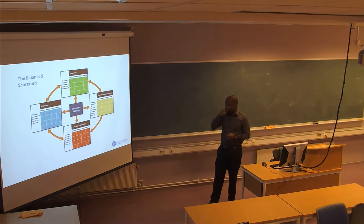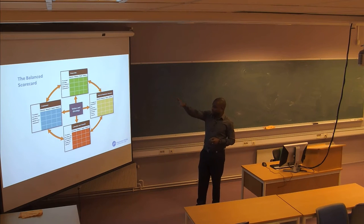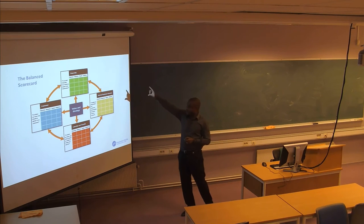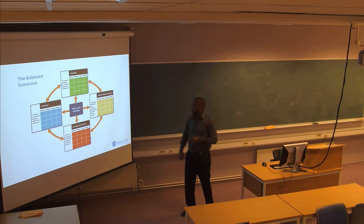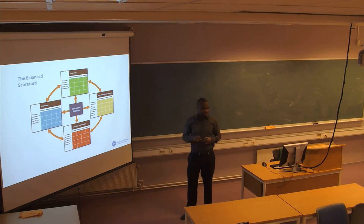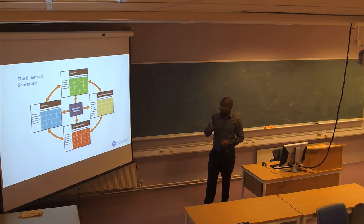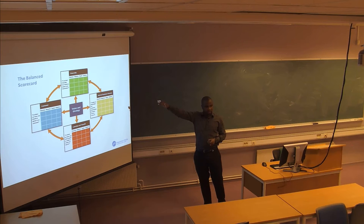At the center of your balanced scorecard is the vision and strategy of your business. You then have four main aspects. The financial aspect asks: in order to succeed financially, how should you appear to your shareholders — the people investing money in your business? You set objectives and measures as to what extent you will meet the expectations of these shareholders, specifying objectives, measures, targets, and initiatives.